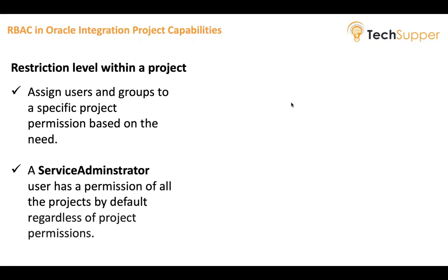However, as a service administrator, that role has all permissions across all projects by default, regardless of the project permissions you assign. For example, a user with a service administrator role, even if not assigned to any project, will still have access to all resources of all projects regardless of permission. Keep in mind that the service roles assigned in the OCI console will take precedence over the permissions you assign here.